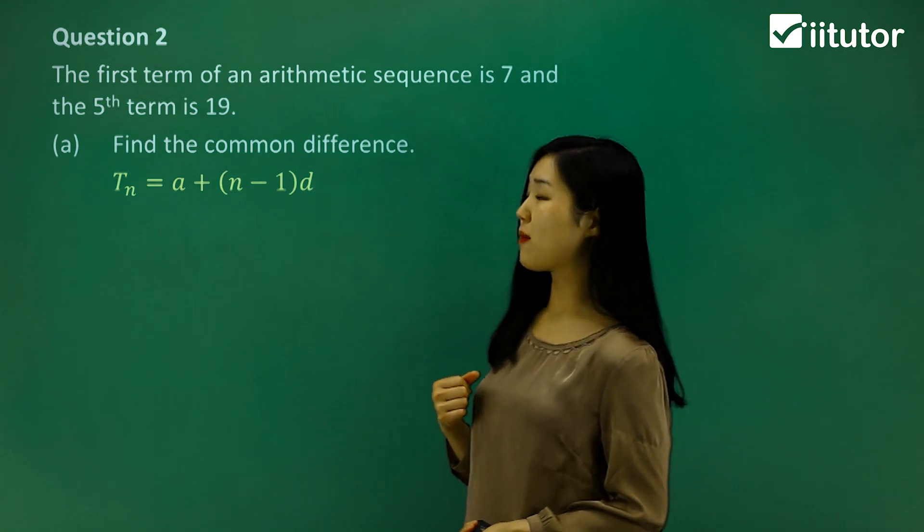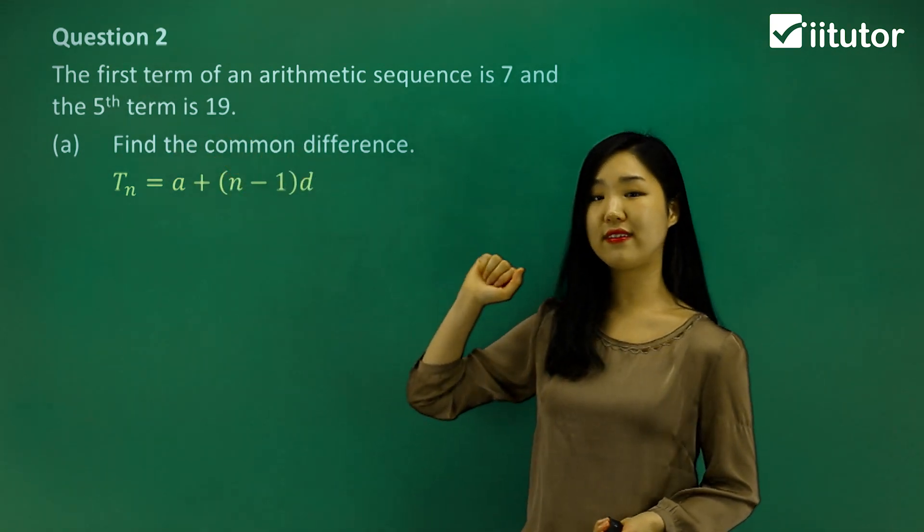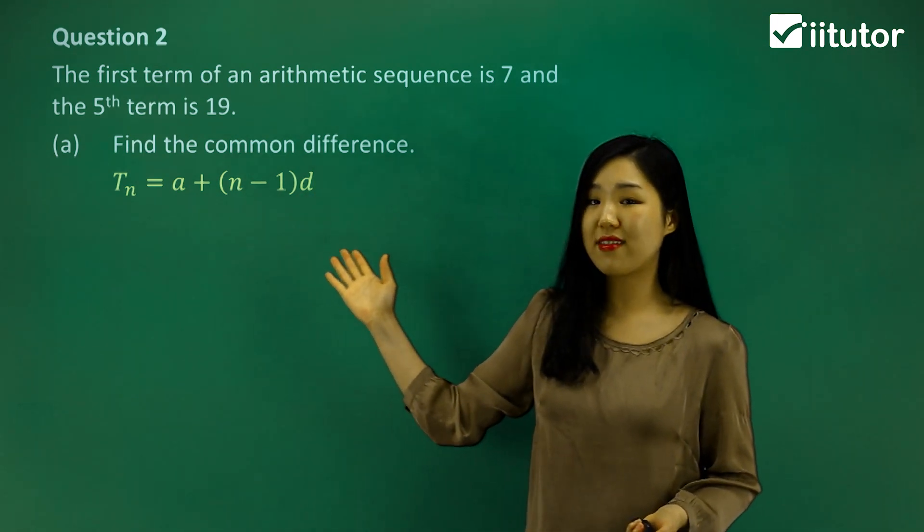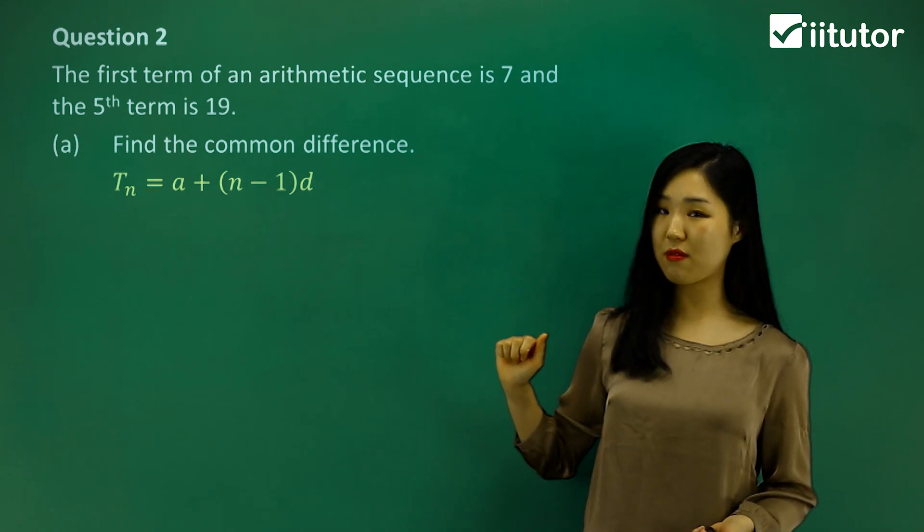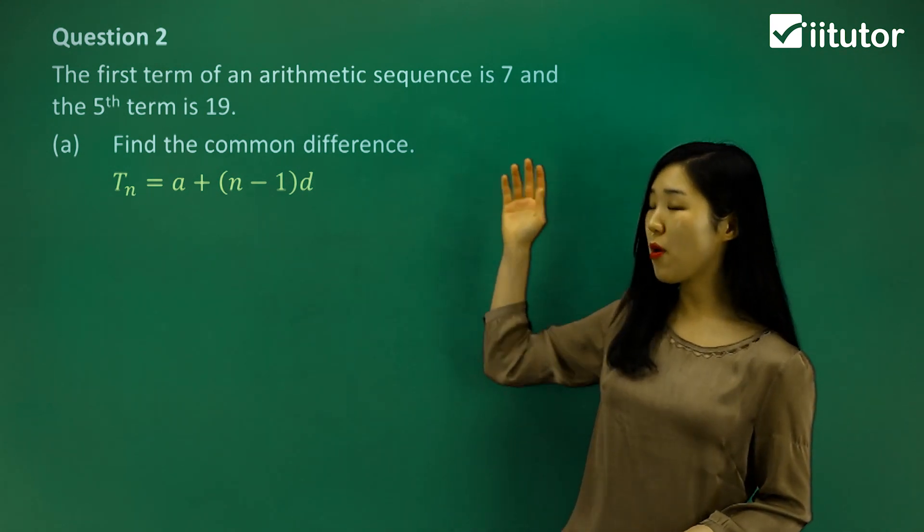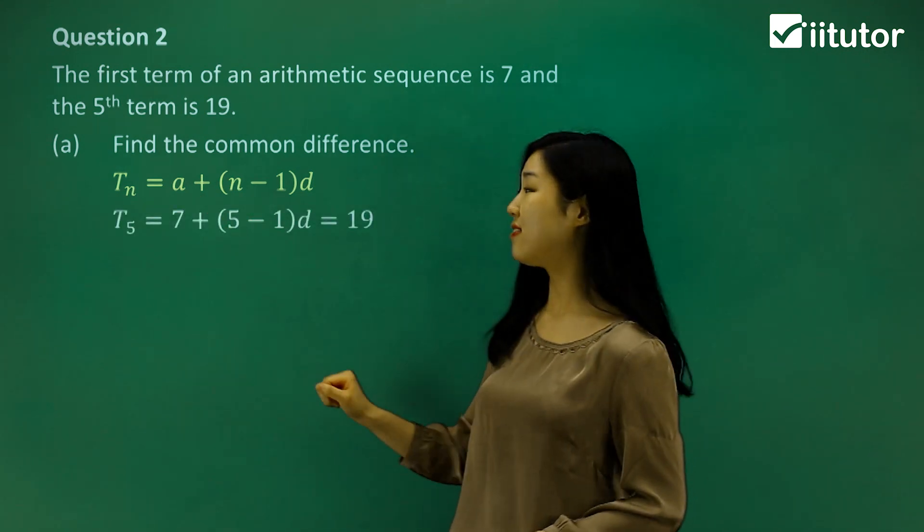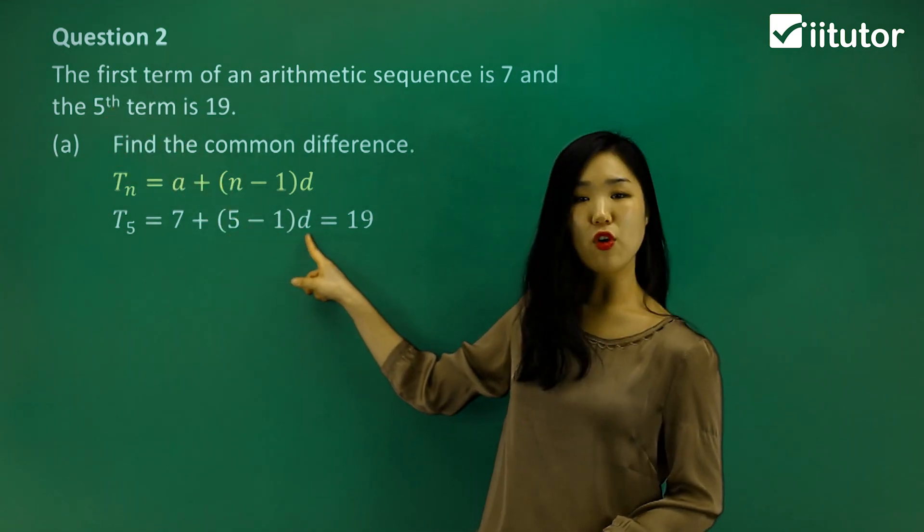Now I'm going to try to use my Tn formula, because they tell us the fifth term is 19. So I want to know what common difference makes the fifth term 19 by using our Tn formula, a plus n minus 1d. And we know what the first term is. The first term is 7, so replace the a with 7. The n, they say it's the fifth term, so I'm going to put 5 into n.